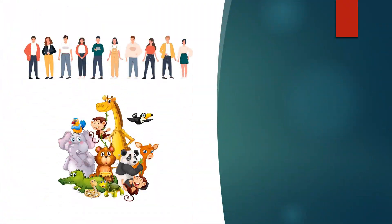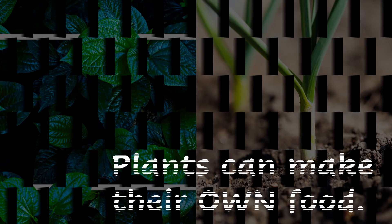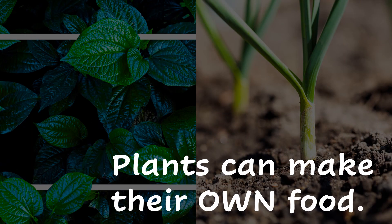While humans and animals eat plants and other animals as food, plants can make their own food. The process of making their own food is called photosynthesis.